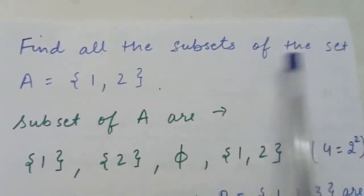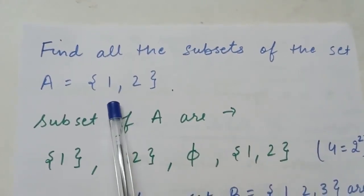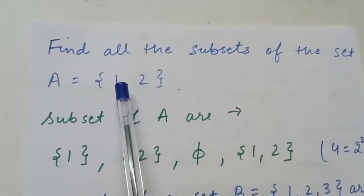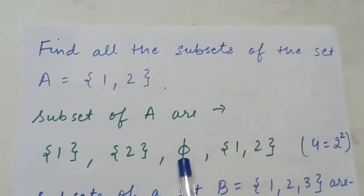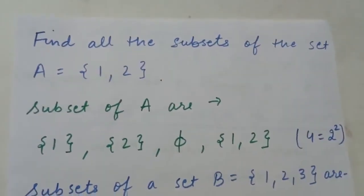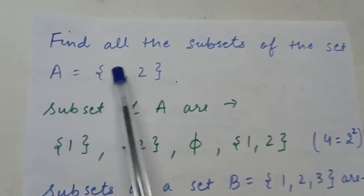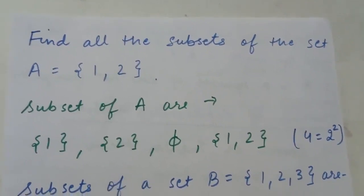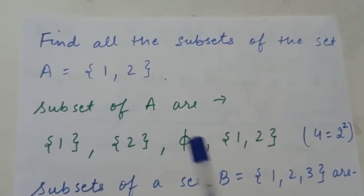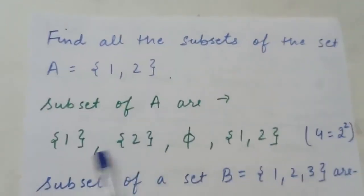Our first topic is how to find all the subsets of set A = {1, 2}. As we know, φ (empty set) is a subset of every set, so φ will come. Also, A is a subset of itself, so the complete set will also come. Since 1 belongs to A, the set {1} is a subset of A, and the set {2} is also a subset of A.